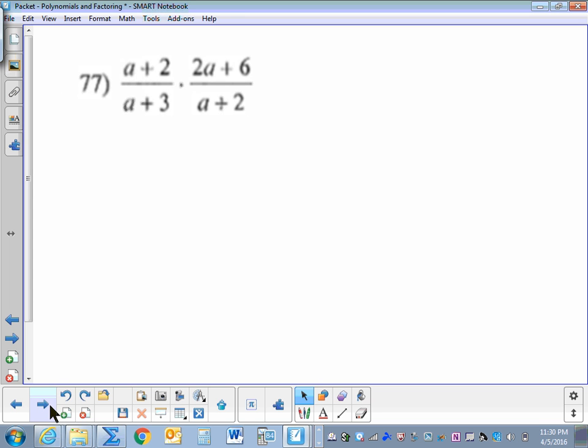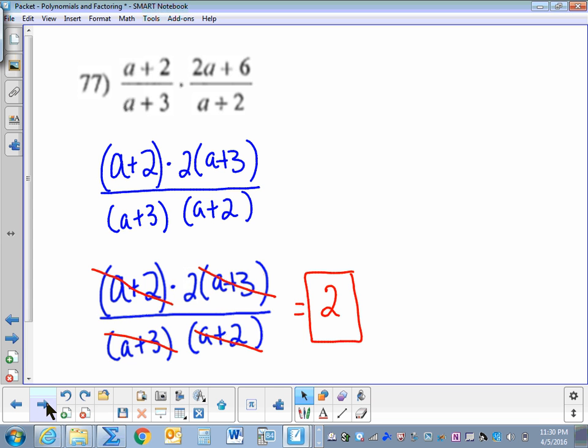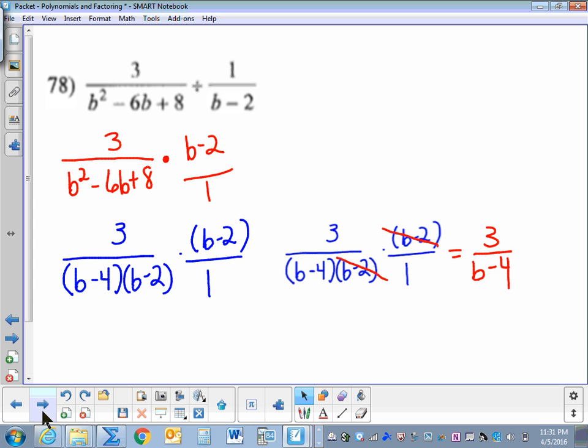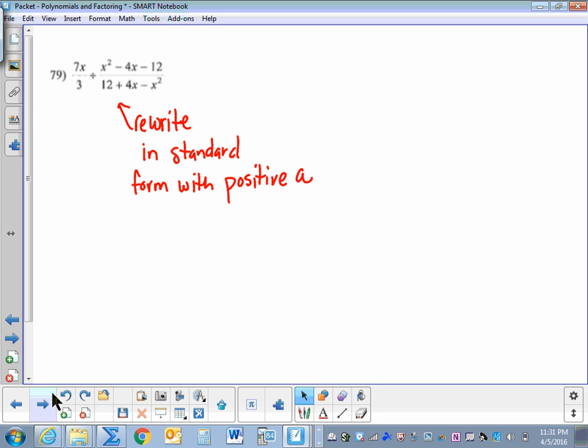Seventy-eight, we're dividing, so we need to multiply by the reciprocal. For seventy-nine, go ahead and rewrite the denominator in standard form, then factor out the negative 1 so you have a positive a. And remember you're dividing.